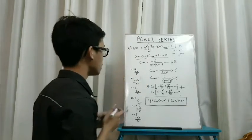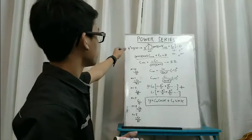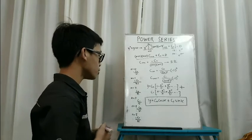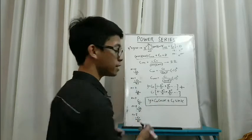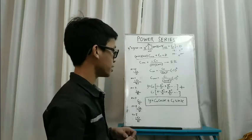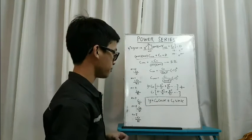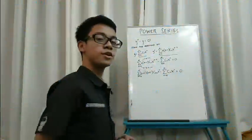So the solution for y double prime plus y equals zero is y equals c sub 0 multiplied by cosine of x plus c sub 1 multiplied by sine of x.